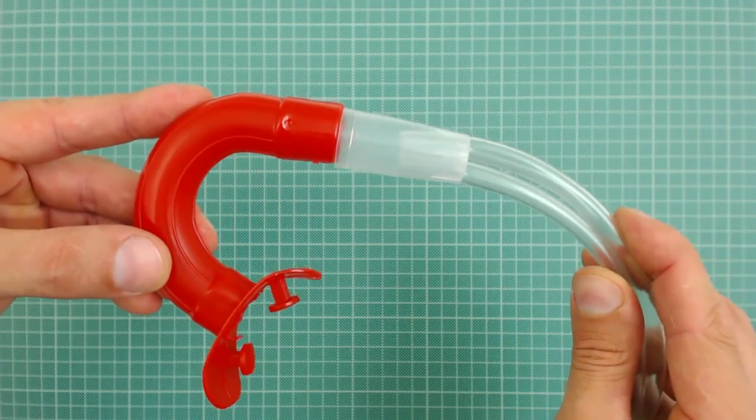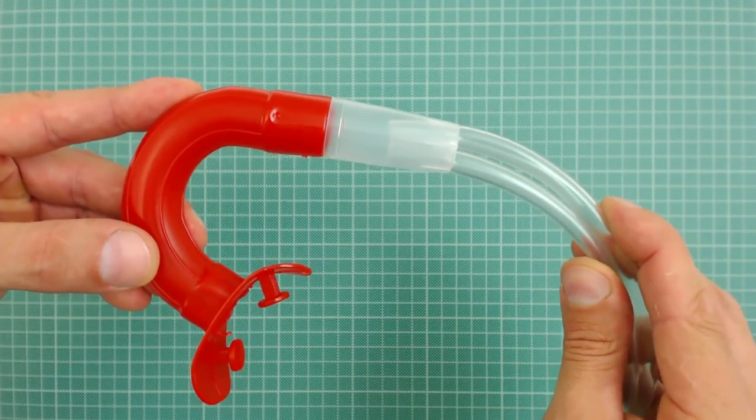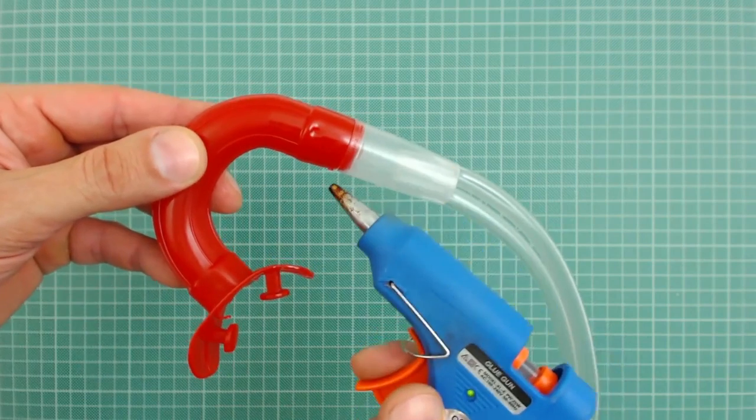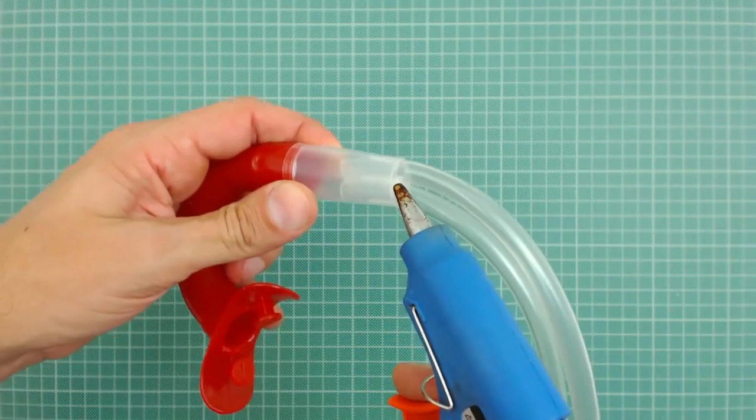The next thing to do is to join the other pieces. First you have to join the snorkel mouthpiece. Try to fit it tight and seal it thoroughly with silicone. You also need to seal the entrance of the tubes with more silicone.